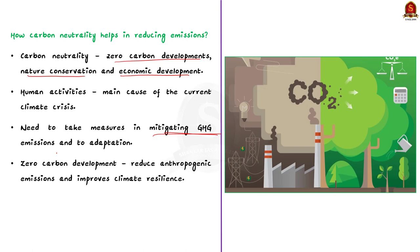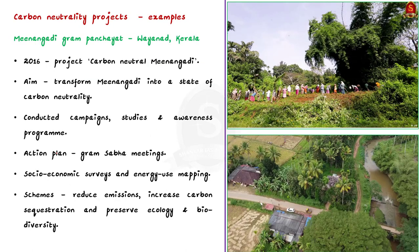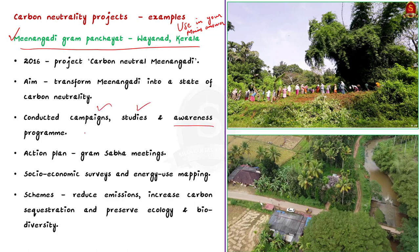A prominent example in today's editorial is Meenangadi Gram Panchayat, located in Kerala's Wayanad district. In 2016, this Panchayat envisaged a project called Carbon Neutral Meenangadi, aiming to transform Meenangadi into a state of carbon neutrality. Initially, they conducted campaigns, studies, and awareness programs about carbon neutrality. Then a carbon gas emission inventory was prepared, and an action plan was finally prepared by organizing gram sabha meetings. They also carried out socio-economic surveys and energy use mapping.